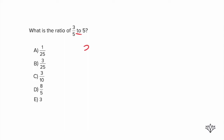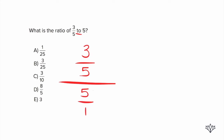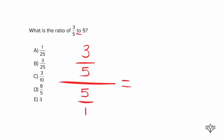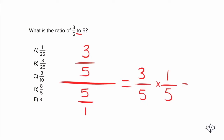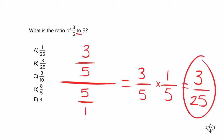So here we would have three-fifths divided by five, and we're going to write it as five over one. Now we're just going to do stay, change, flip. Three-fifths stays, our division sign becomes multiplication, and five over one is what we flip. So now we have three-fifths times one over five. We multiply across the top and across the bottom — three across the top, twenty-five across the bottom — which is answer choice B.